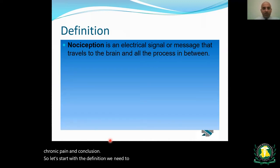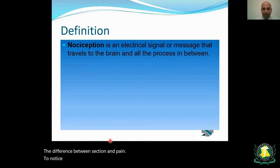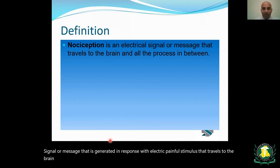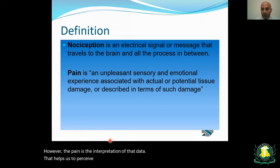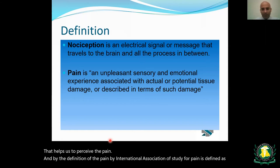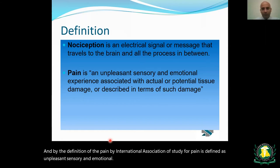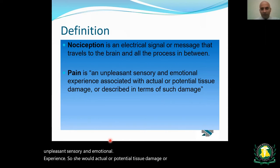We need to understand the difference between nociception and pain. Nociception is an electric signal or message generated in response to a painful stimulus that travels to the brain — it's just data. Pain, however, is the interpretation of that data. By the definition of the International Association for the Study of Pain, pain is defined as an unpleasant sensory and emotional experience associated with actual or potential tissue damage, or described in terms of such damage.